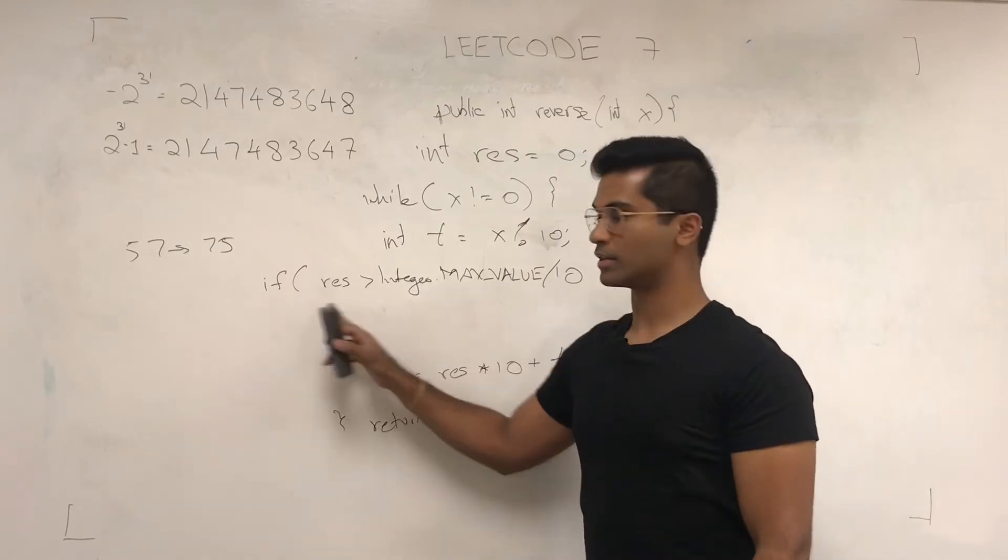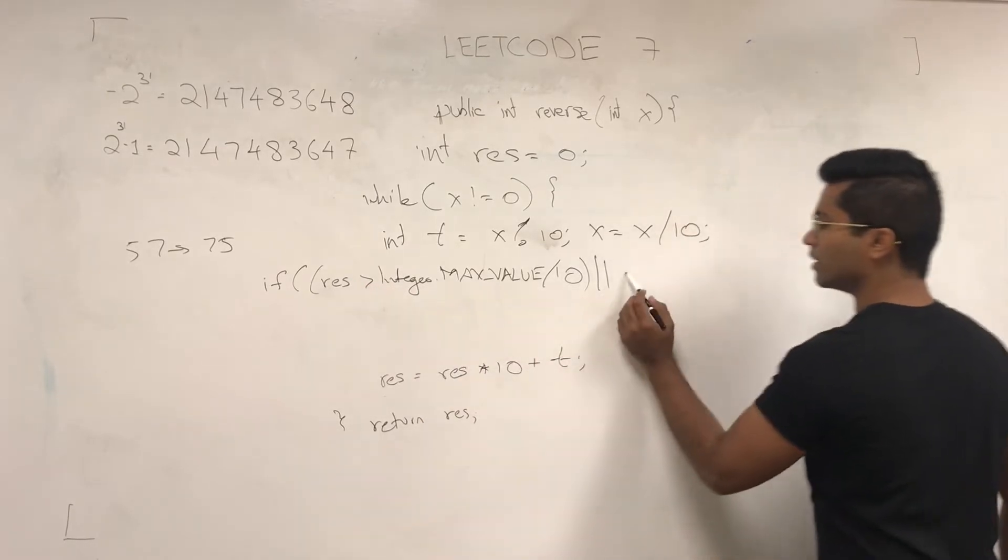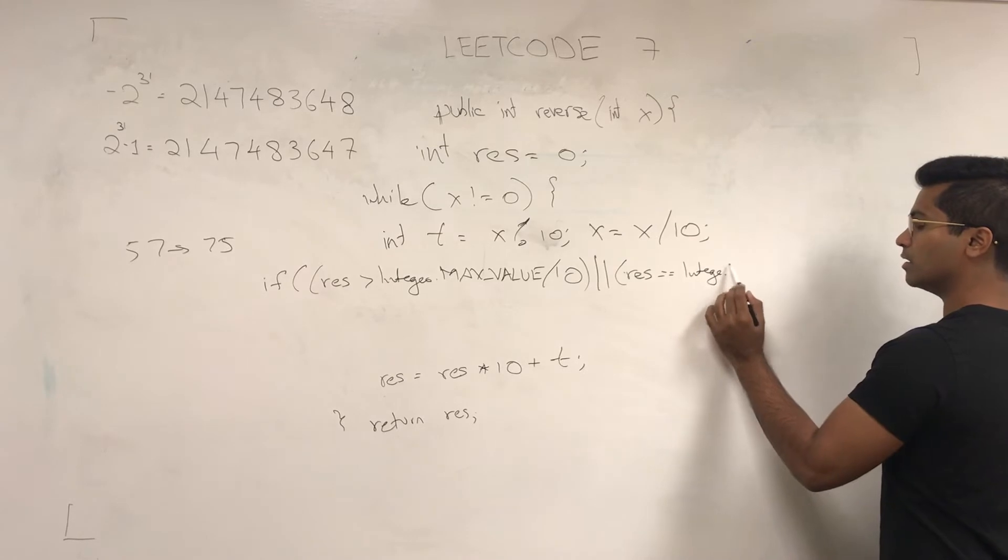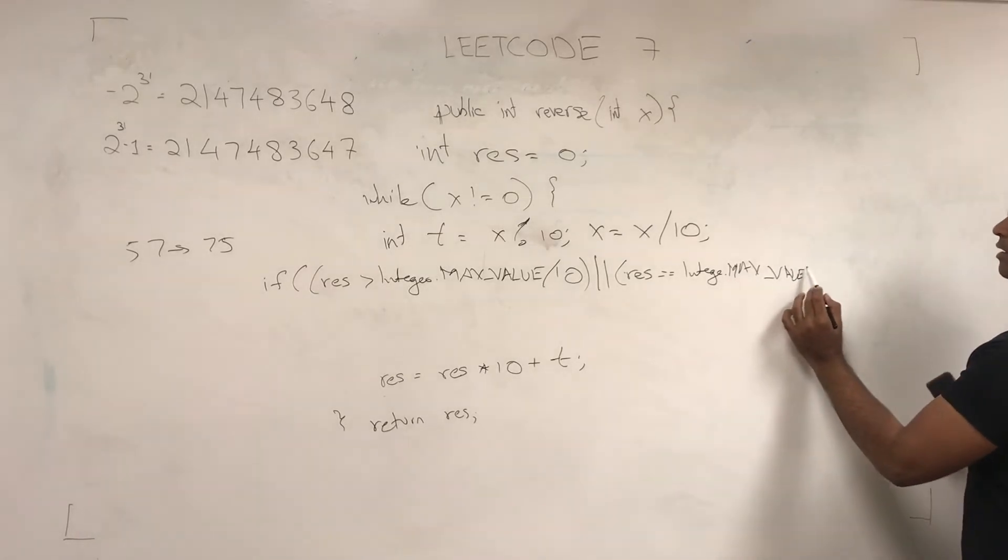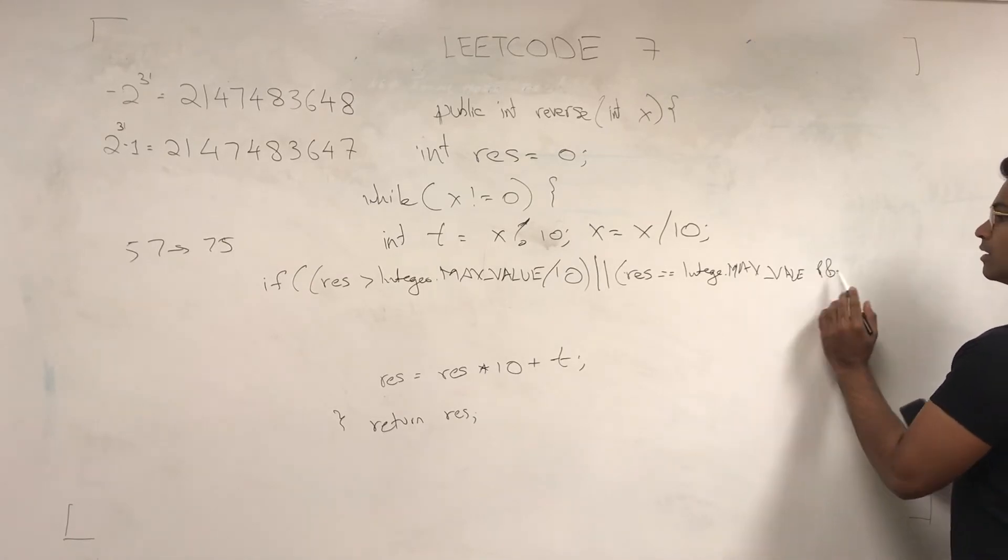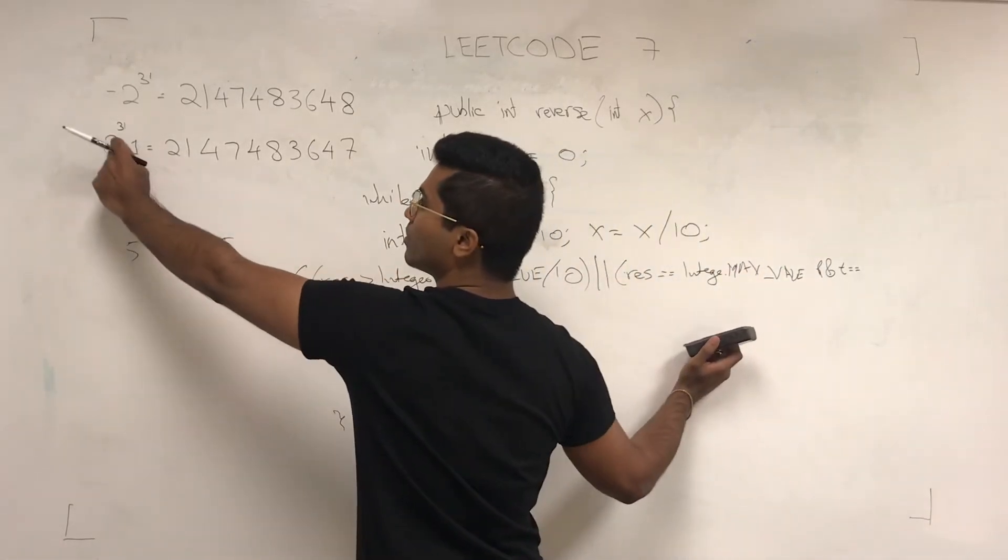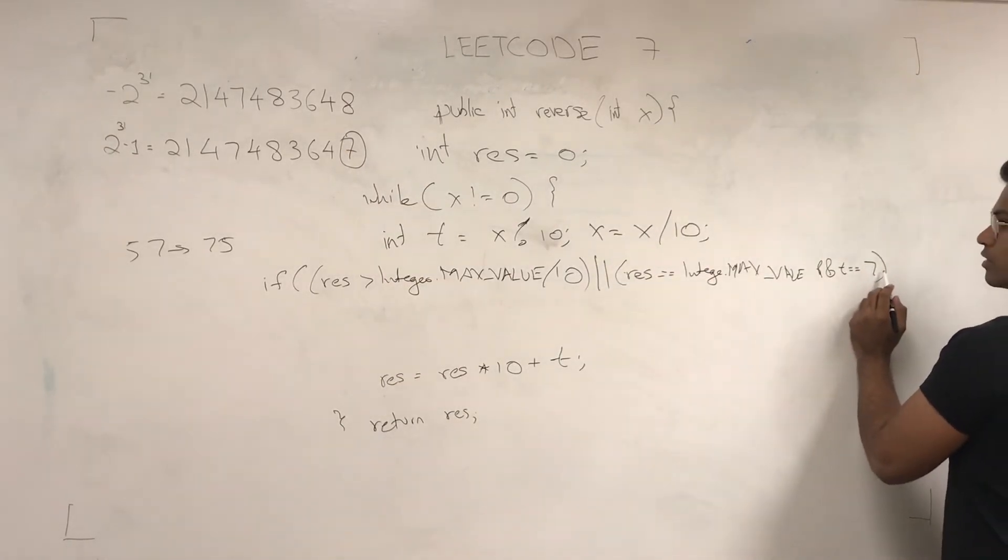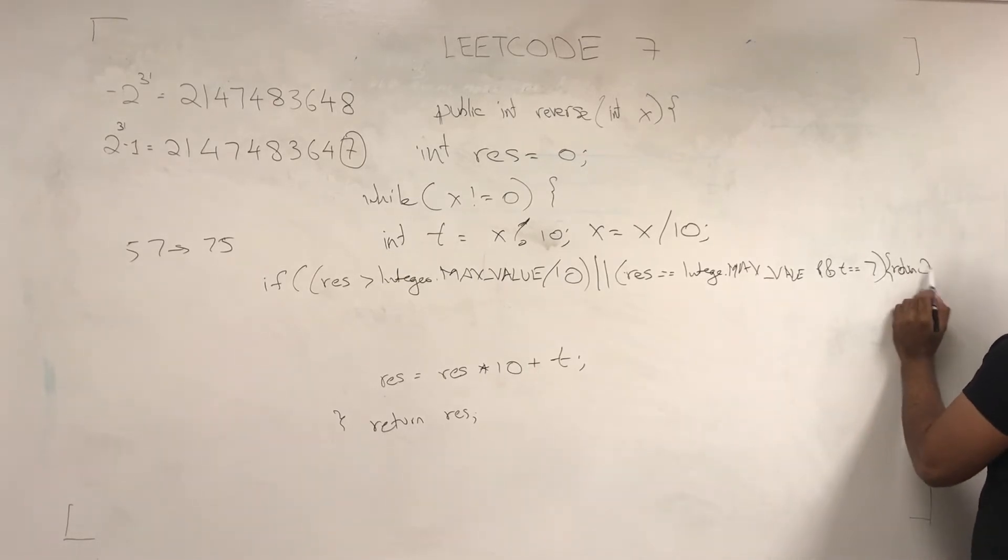And we can compare if res is going to be greater than, or if res is equal to integer.maxValue and t is equal to 7, because the greatest one we can have is 2^31 minus 1 and this ending number is 7. Then we return 0.